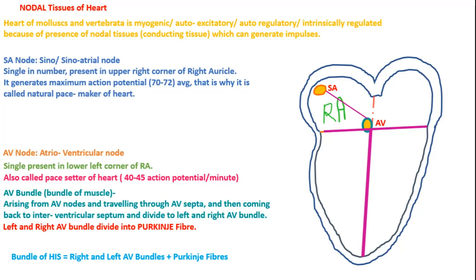From the AV node, the AV bundle — atrio-ventricular bundle — is formed. It travels through the ventricular septum, then divides into left and right directions. These branches are called Purkinje fibers. So the Bundle of His consists of right and left AV bundles plus Purkinje fibers.